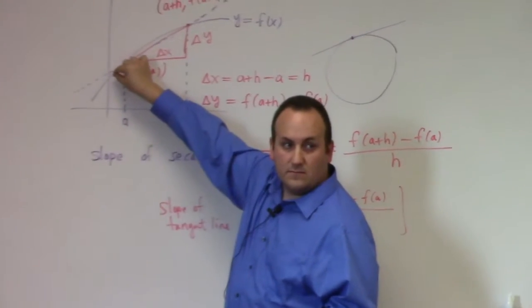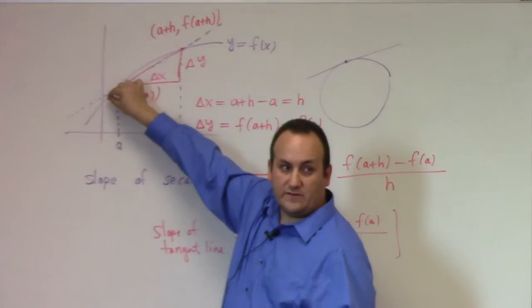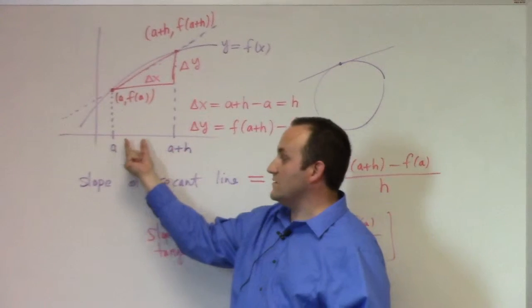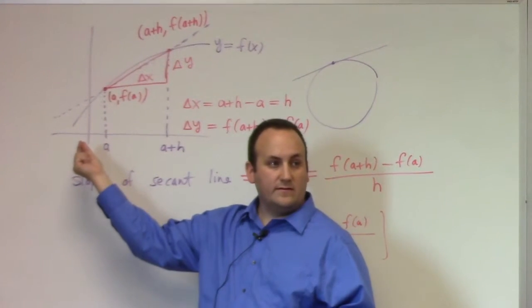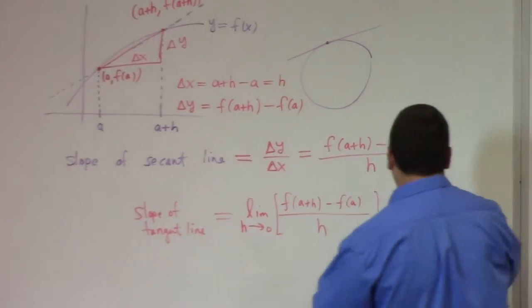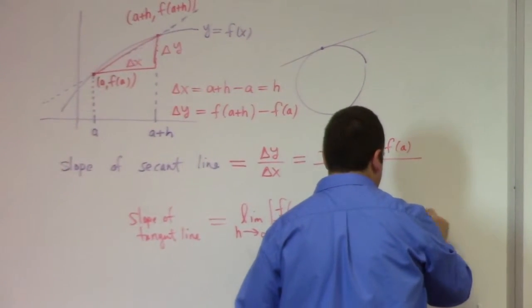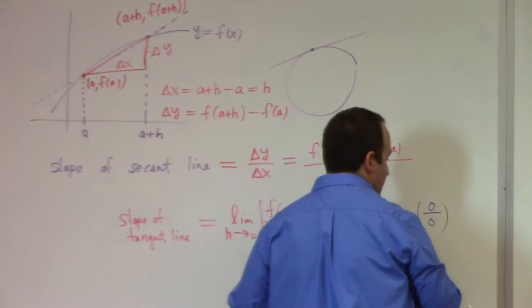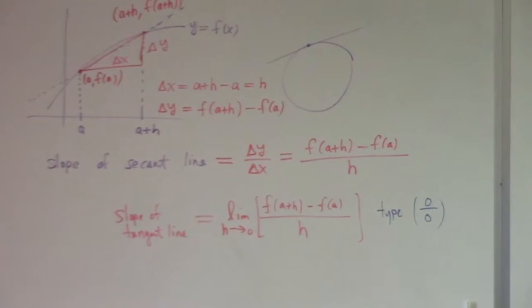What happens to the numerator as you get to the limit point? It gets really close to zero. What happens to h as you get to the limit point? It gets to zero.